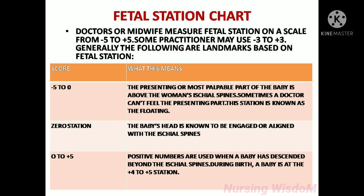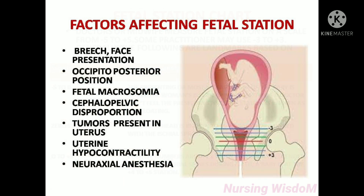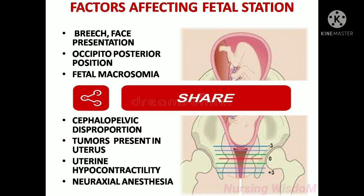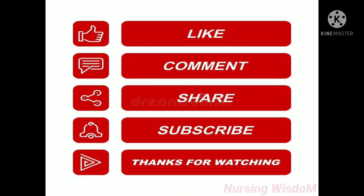Station zero to plus five means positive numbers are used when the baby has descended beyond the ischial spines. During birth, a baby is at the plus four to plus five station. Factors affecting fetal station include breech and face presentation, occiput posterior position, fetal macrosomia, cephalopelvic disproportion, tumors present in the uterus, uterine hypocontractility, and neuraxial anesthesia. Thank you for watching.